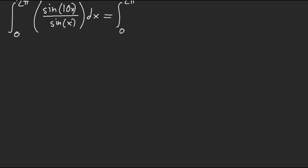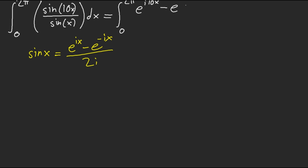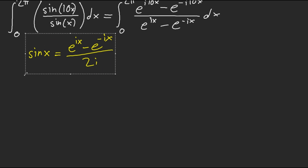We're going to write it in terms of imaginary numbers. Remember that sine of x equals e^(ix) minus e^(-ix) over 2i. Because we're using it in both top and bottom, the 2i is going to cancel out. So what we have is e^(i10x) minus e^(-i10x) over e^(ix) minus e^(-ix). Now, how do we continue from here? How on earth do we simplify this?